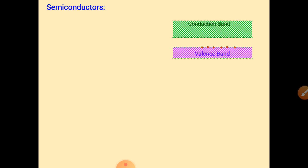Now for semiconductors, as seen in the diagram, there is a gap between the valence band and conduction band called the forbidden gap. Different semiconductors have different forbidden gap values. For example, if the gap is about one electron volt, an electron receiving that amount of energy from any source can move from the valence band to the conduction band.